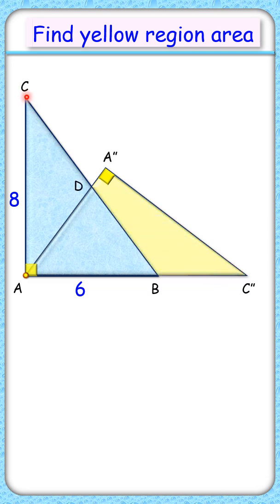Let's check the solution. Here area of triangle CAB is half of base into height or 24 centimeter square.